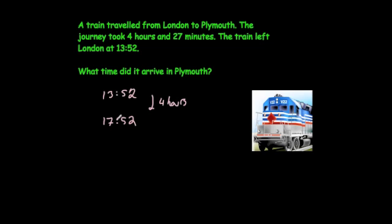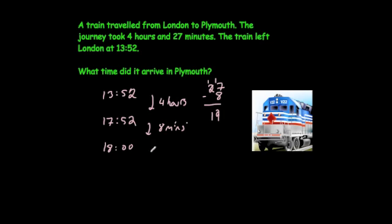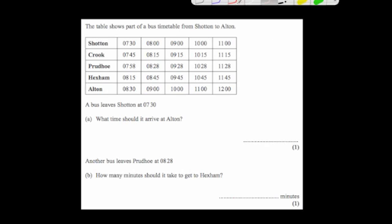We're now at 17:52, which is eight minutes to six. We still need to add 27 minutes. To get to the next hour — 18:00 — is another 8 minutes. So we've accounted for 4 hours and 8 minutes of the journey. We had 27 minutes to add, so subtracting the 8 minutes we've used leaves 19 minutes. Adding 19 minutes to 18:00 gives 18:19, or 19 minutes past six. The answer is 18:19.